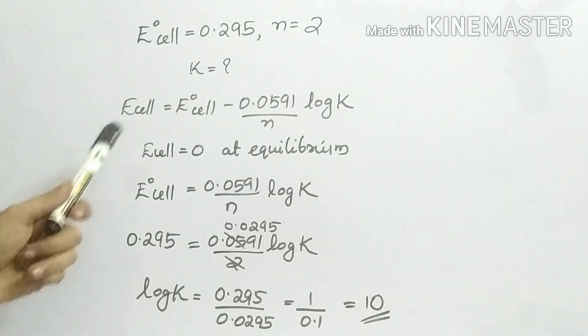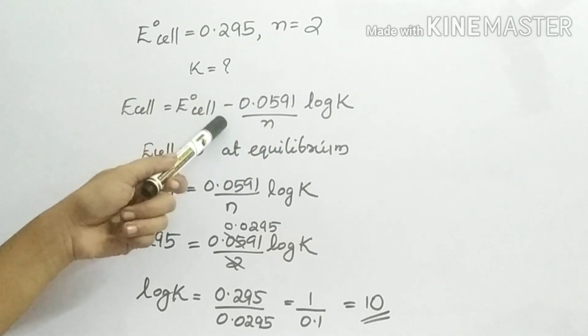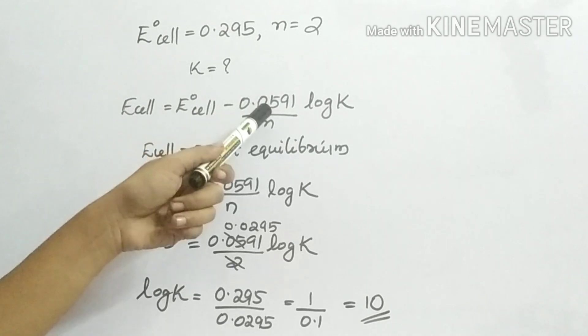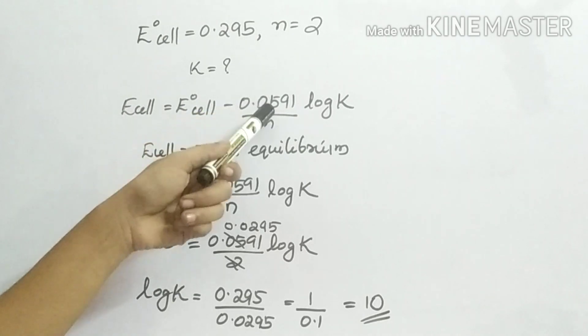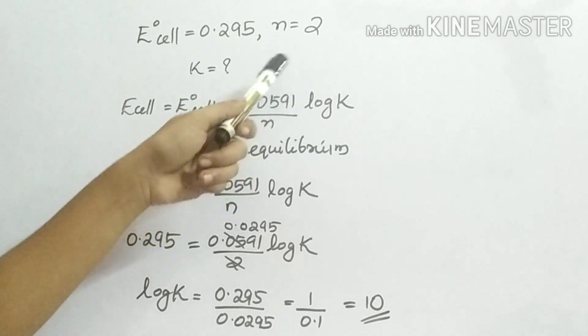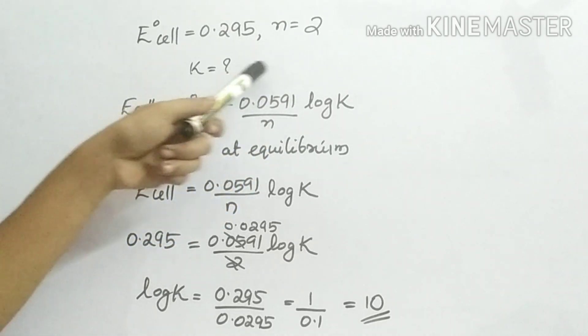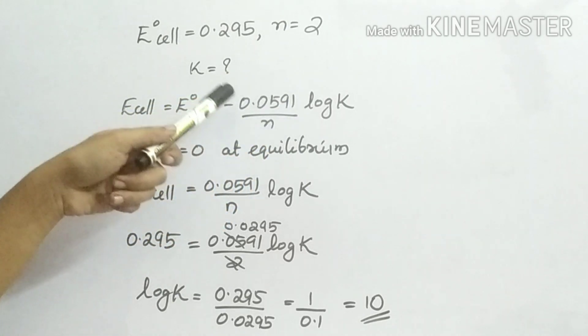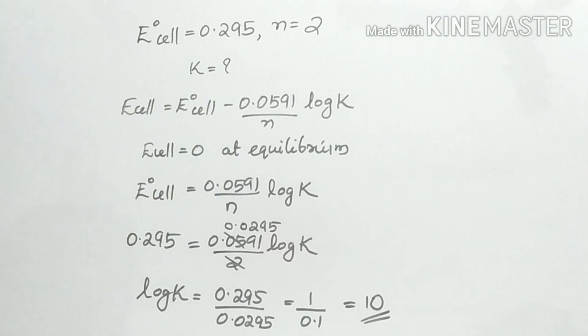E0 cell minus... This R value gives us 0.059. We will use this value.